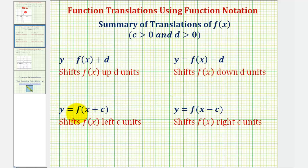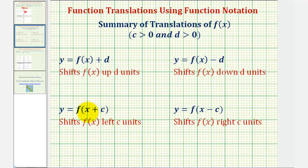Next we have y = f(x + c). Notice how this plus c is going to affect the inputs into our function, and because we're adding c to x, we'd actually have to use smaller values of x to produce the same inputs as the basic function f(x). Which means by adding c here, we'd actually shift the graph left c units, because we'd be using smaller values of x to produce the same inputs as f(x).